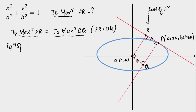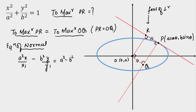Let's start with the equation of the normal. The equation is: a²x/x₁ − b²y/y₁ = a² − b². Writing this in parametric form, since the point is (a cosθ, b sinθ), we substitute x₁ = a cosθ and y₁ = b sinθ to get: ax/cosθ − by/sinθ = a² − b². This is the equation of the normal, on which we'll drop the perpendicular OQ from the origin.